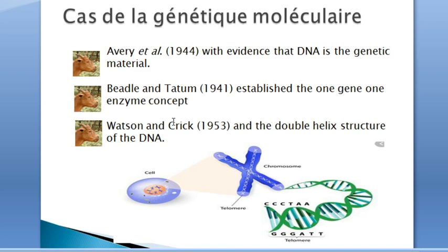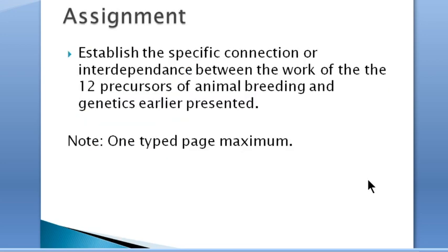The revolution of animal breeding and genetics, and more specifically the application of modern molecular biology to genetics and animal breeding, started with the discovery of the double helix structure of DNA by Watson and Crick in 1953.